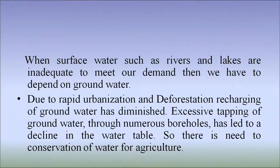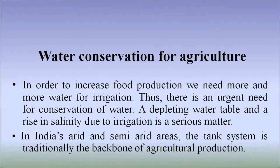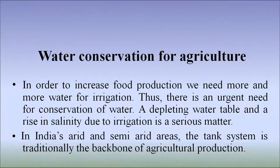Due to rapid urbanization and deforestation, recharging of groundwater has diminished. Excessive tapping of groundwater through numerous boreholes has led to a decline in the water table. So there is a need to conserve water for agriculture. In order to increase food production, we need more and more water for irrigation, thus there is an urgent need for conservation of water. Depleting water table and rise in salinity due to irrigation are serious matters. In India's arid and semi-arid areas, the tank system is traditionally the backbone of agricultural production.